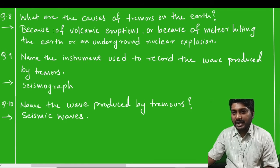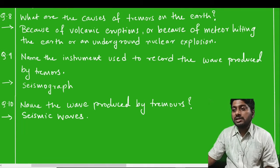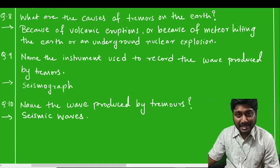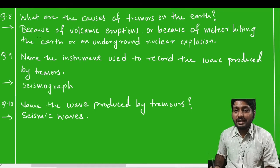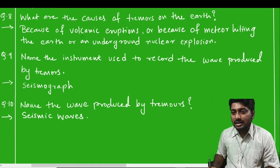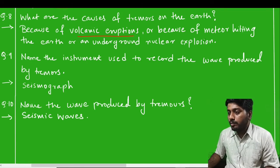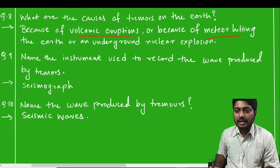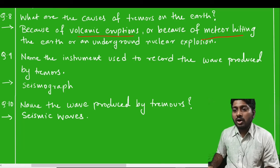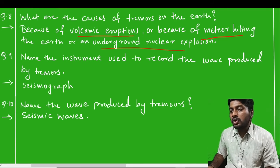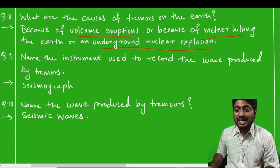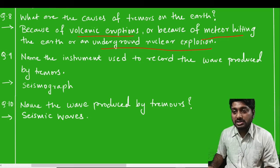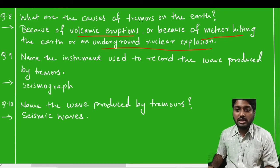Question number eight: what are the causes of tremors on the earth? There are various causes — a few of them are volcanic eruptions, a meteor hitting the earth, or an underground nuclear explosion. These are the causes due to which there can be tremors on the earth.